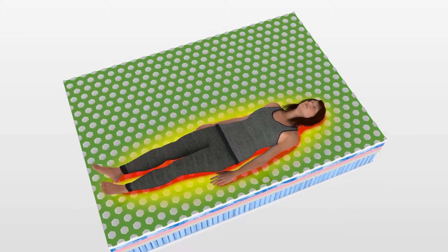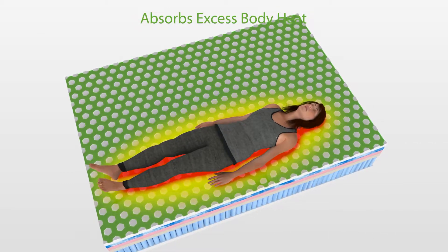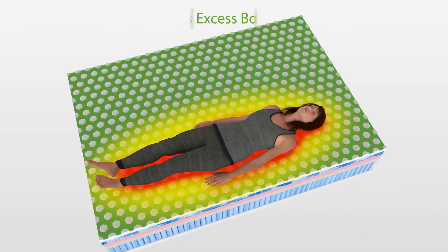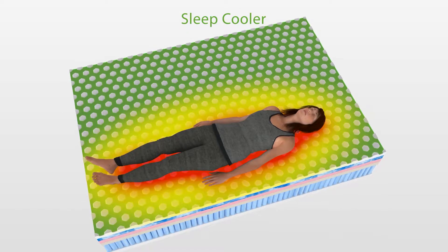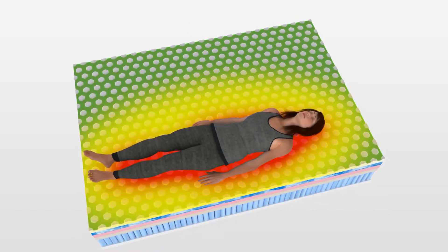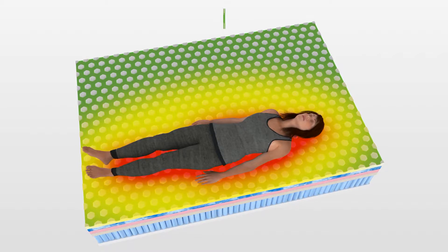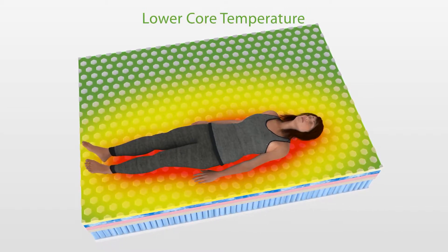The three-dimensional gel technology layer absorbs excess body heat and draws that heat away from the body, diffusing it. Laboratory research found that as you are falling asleep, the body wants to lower its overall cool temperature.